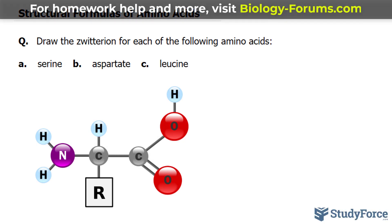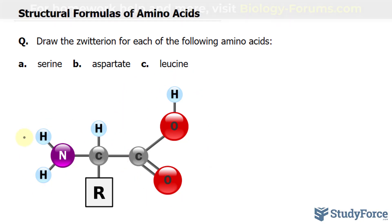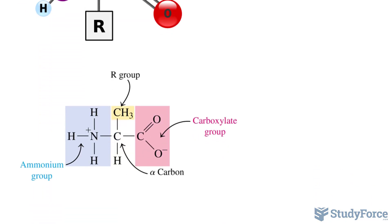Let's take a look at the general formula of an amino acid. All amino acids have this carboxyl group, which I'm hovering over, and this amino group. What differentiates the different types is this part, which we abbreviate with R for the rest of the molecule. Now, at physiological pH, amino acids change a little bit.